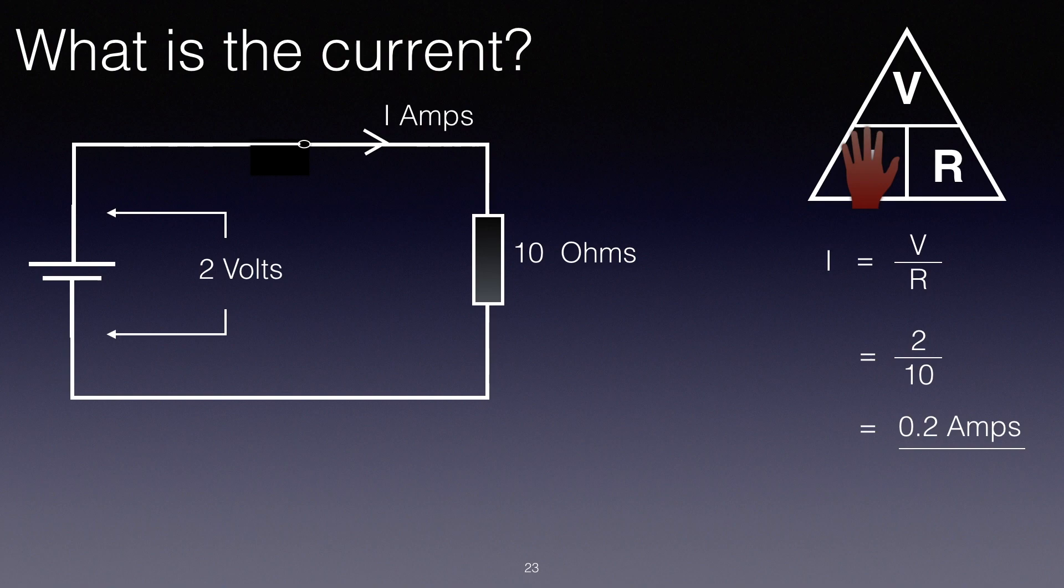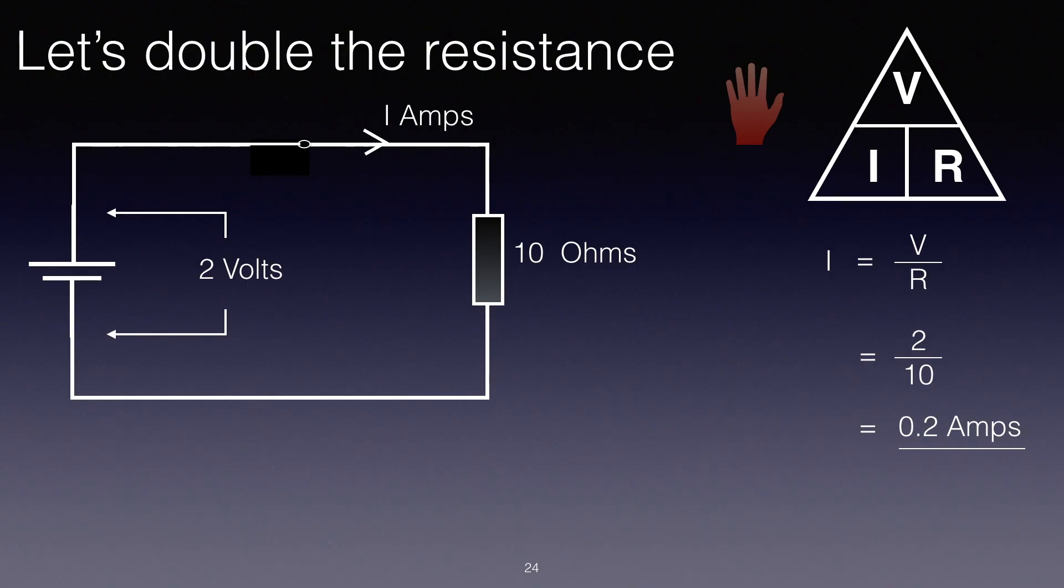Let's use the same figures but double the resistance. We'll take the ten ohms, cross it out, and make that 20 ohms. In our calculation we'll cross out the ten and make it 20. That gives us a new answer of 0.1 amps. So you can see there that doubling the resistance has halved the current.